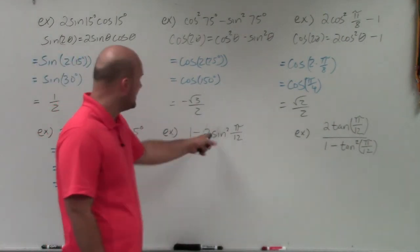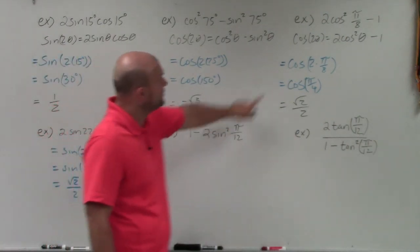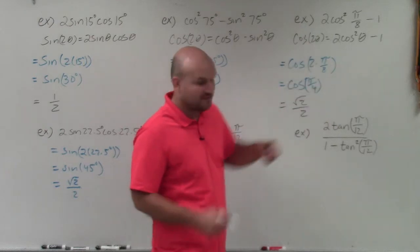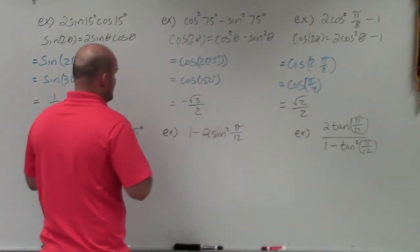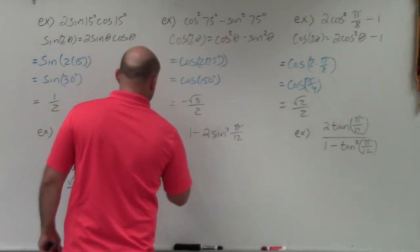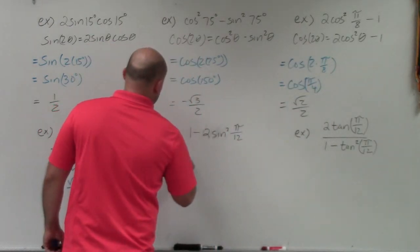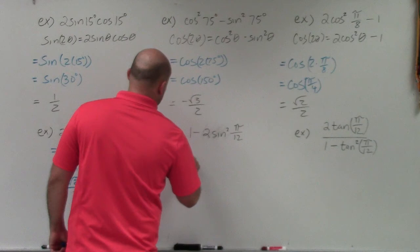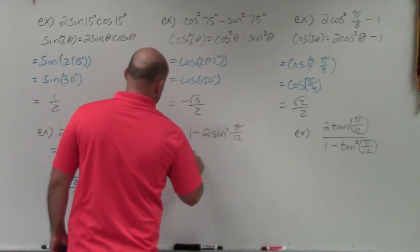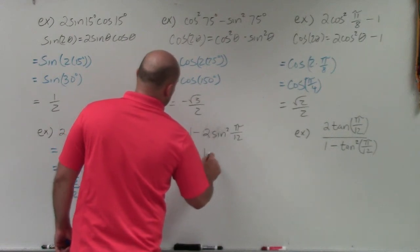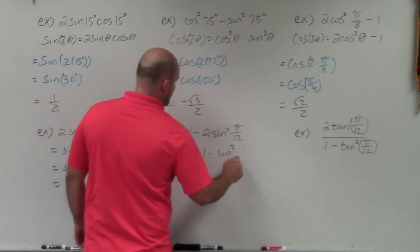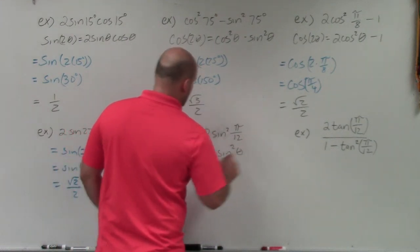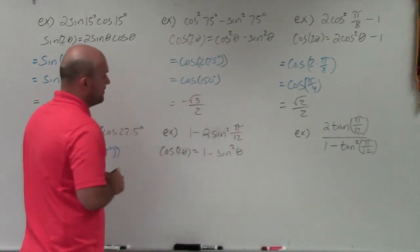In the next example, this is another representation of cosine. The double angle formula here is cosine of 2θ equals 1 minus 2 sine squared θ. Again, what we're doing is doubling up the angle by identifying theta from the expression.